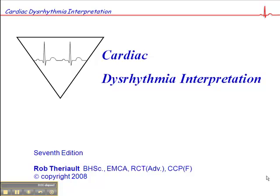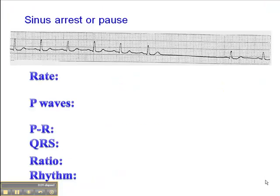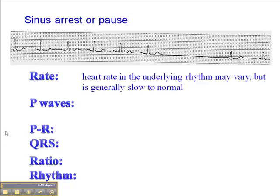On page 61 of your Cardiac Rhythm Interpretation book, we're talking about sinus arrest or sinus pause. This is a potentially lethal rhythm where the heart rate and underlying rhythm may vary because these patients typically have sick sinus syndrome, where they have disease of the SA node. The rhythm may vary, but generally it's slow to normal.